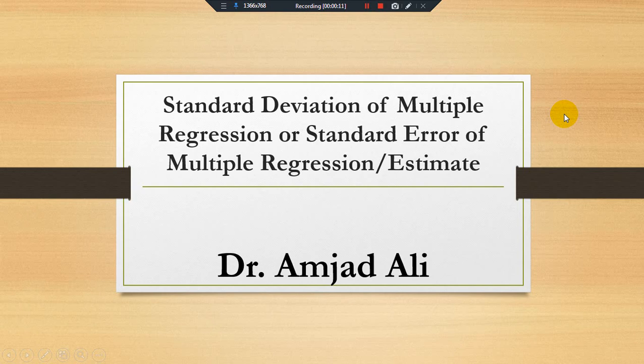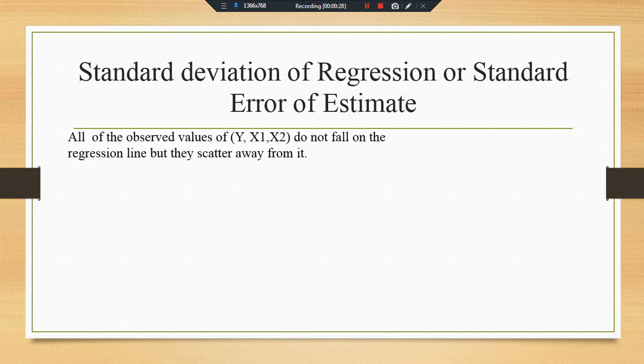Dear students, the definition and interpretation of multiple regression standard error or simple regression standard error are somehow the same. Only formulas and notations are different, which will be discussed here in detail. As we know, all of the observed values of y, x1 and x2 in multiple regression do not fall on the regression line but they scatter away from it.